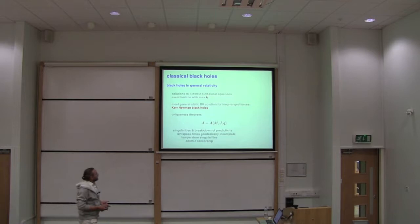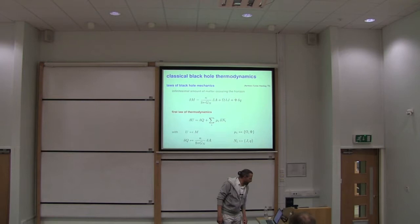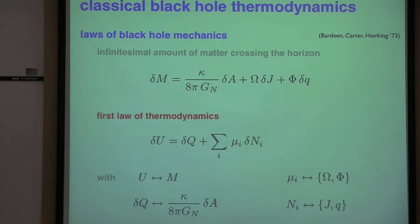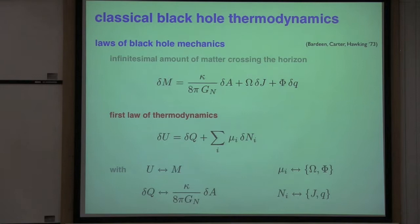So much for the description of classical black holes. Now allow me to remind you of how these classical black holes are related to a thermodynamical description. What I would like to do in this sequel is exploit this relation to put forward a proposal on how quantum gravity corrections are going to modify the physics of classical black holes. This goes back to work by these gentlemen in the early 70s and is largely based on a type of thought experiment.